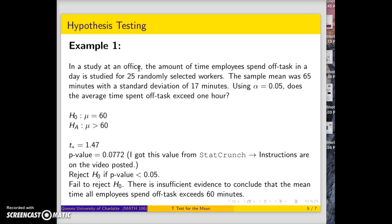Since our p-value of 0.0772 is greater than 0.05, we fail to reject H₀. There is insufficient evidence to conclude that the mean time for all employees exceeds 60 minutes.